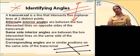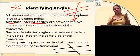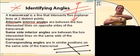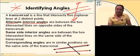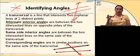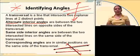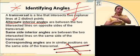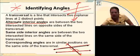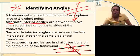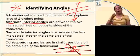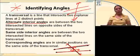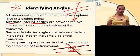Alternate interior angles are on alternate, opposite sides of the transversal. Interior means between those two lines being crossed by the transversal. In the figure, alternate interior angles are on opposite sides of the transversal in between the two lines — angle one with angle two, and angle three with angle four.